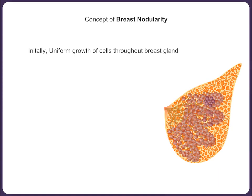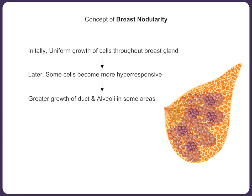Initially, in most women, there is a uniform growth of cells throughout the breast. Later on, some cells become hyper-responsive to the hormones, resulting in more growth of the ducts and lobules in some areas, resulting in nodularity. If you examine a lady with nodularity in the premenstrual phase, you will encounter pea-sized, often tender nodules scattered throughout the breast with soft and supple breast tissue in between.